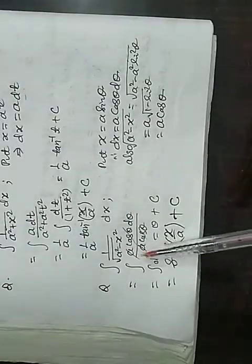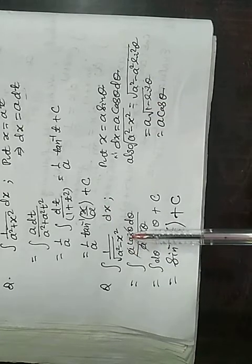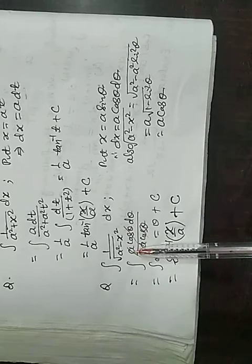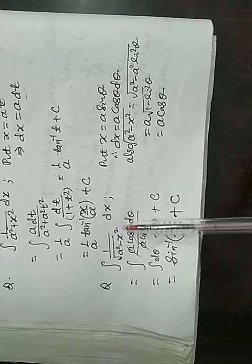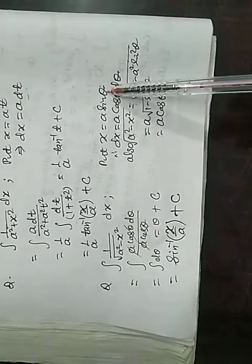This question is integration of 1 upon root a square minus x square dx. We have to think about how root a square minus x square comes out of the bracket. If you put x equal to a sin theta, you will get dx equal to a cos theta d theta. So, root of a square minus x square equals square root of a square minus a square sin square theta.